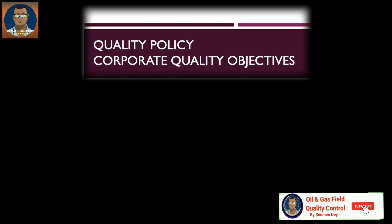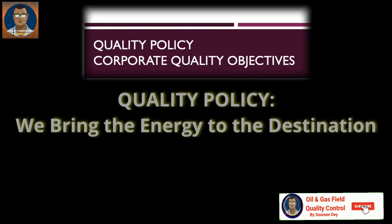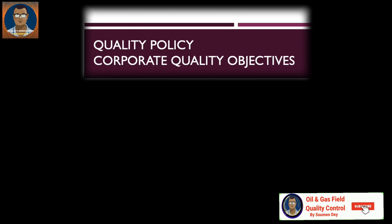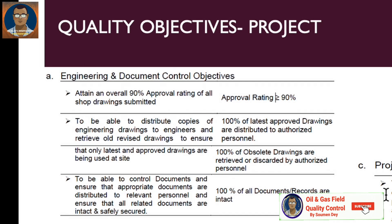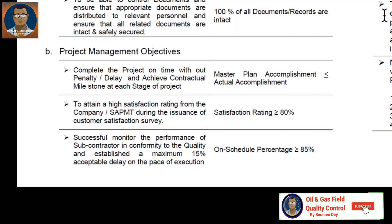Quality policy and quality objectives are a little bit different. Quality policy is a general policy for the organization which they apply to their business overall. Here is an example of a quality policy: 'We bring the energy to the destination.' Now, quality objectives of a project are generally measurable, mentioned with some percentage. For example, the engineering and document control department can have an objective of overall 90% approval rating for all shop drawings. Project management can have an objective to complete the project on time without penalty or delay and achieve contractual milestones on schedule at each stage.